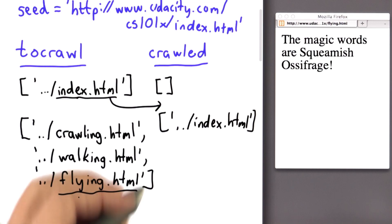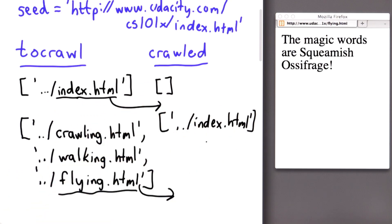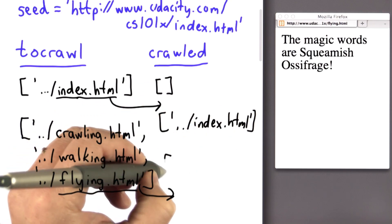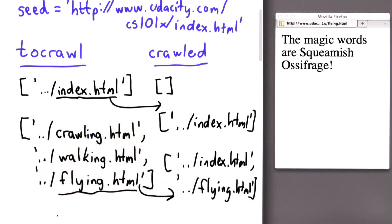And now we've finished crawling flying. So that's going to be added to the crawled list, which already had index.html. We don't lose that. We're going to add the new one, which is flying, to that list. And we've finished crawling it, so we don't want to crawl it again. Let's remove it from the to crawl list.